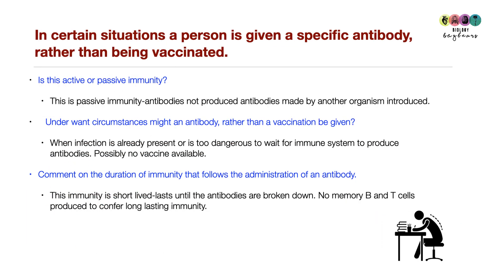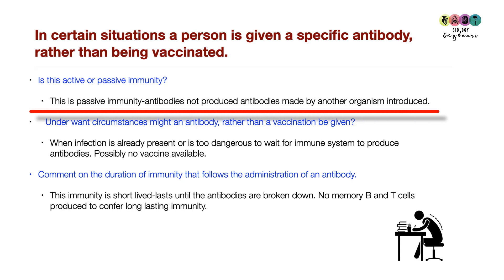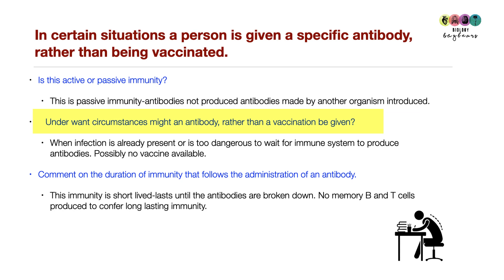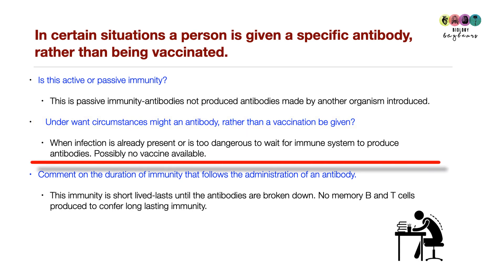If a person is given a specific antibody rather than being vaccinated, this is passive immunity because the antibodies are not produced by that person's B cells — antibodies made by another organism are introduced. Conditions where an antibody might be given rather than a vaccine include: an infection already present, it being too dangerous to wait for the immune system to respond, or no vaccine being available.